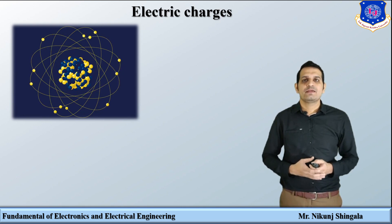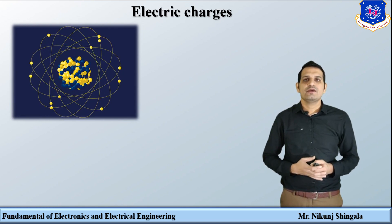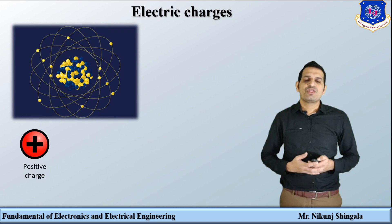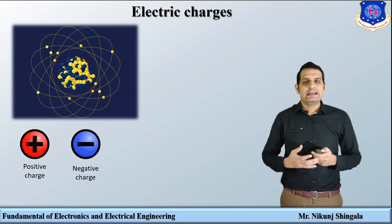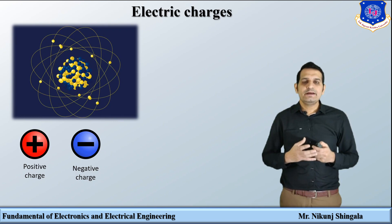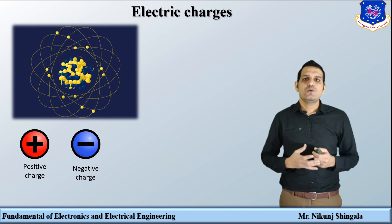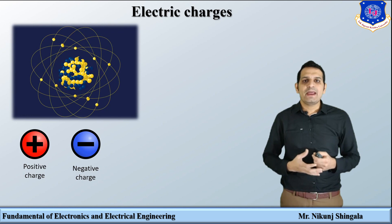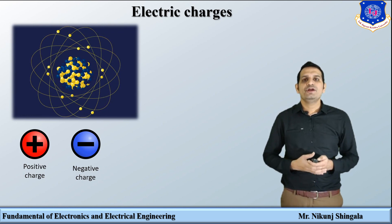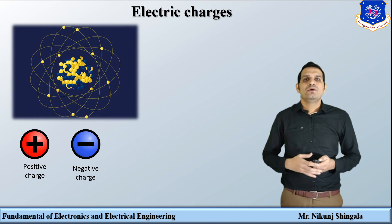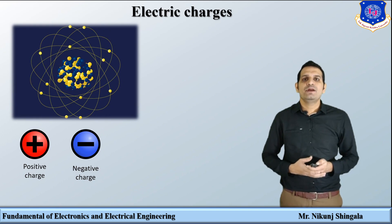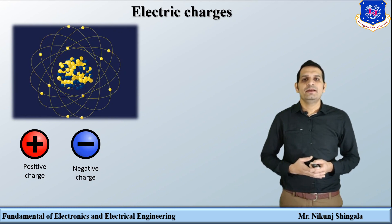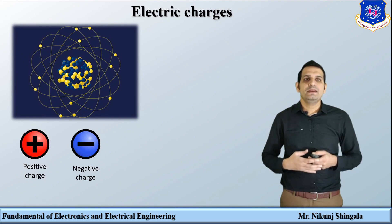An atom consists of two parts: nucleus and orbits. In the nucleus, protons and neutrons are present. In the orbit, electrons are revolving. Protons are considered to be positively charged particles and electrons are considered to be negatively charged particles. An atom is electrically neutral, meaning it consists of an equal number of protons and electrons. If an electron is removed from an atom by applying some energy, there are more positive charges than negative charges, so the atom is converted into a positively charged body. If a neutral body is supplied with electrons, there is an excess of electrons and the atom is converted into a negatively charged body.